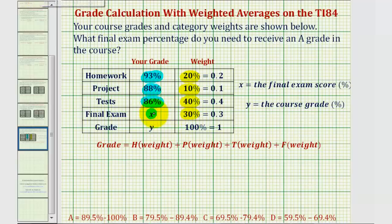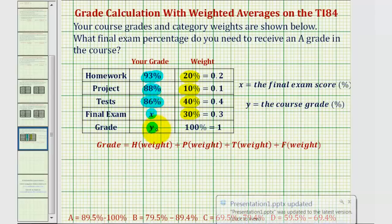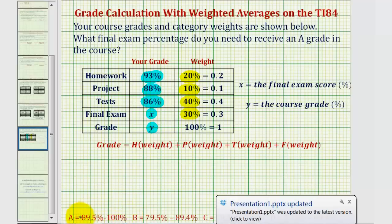So our goal here is to determine what value of X we have to score in order to have an A grade where the lowest A is 89.5%. And we'll let Y equal the course grade as a percentage. So we're going to set up an equation using weighted averages and then use the calculator to determine what X value we need in order to have a Y value that's at least 89.5%, resulting in an A.